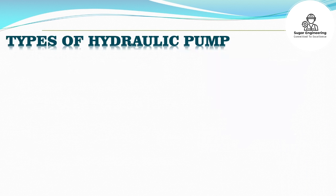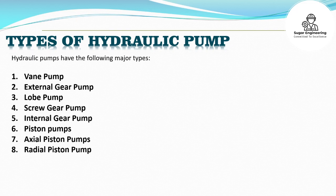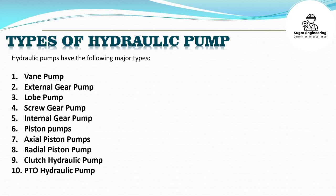Hydraulic pumps have the following major types: Vane Pump, External Gear Pump, Lobe Pump, Screw Gear Pump, Internal Gear Pump, Piston Pumps, Axial Piston Pumps, Radial Piston Pump, Clutch Hydraulic Pump, and PTO Hydraulic Pump.